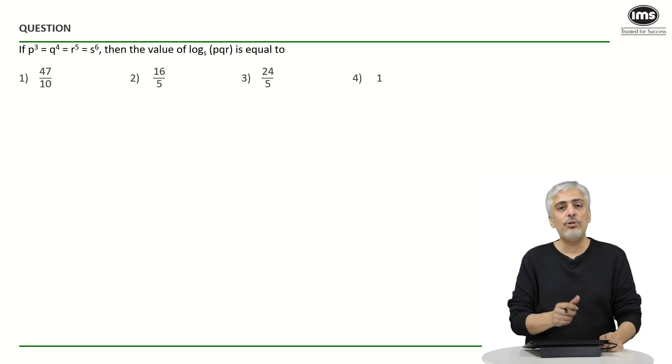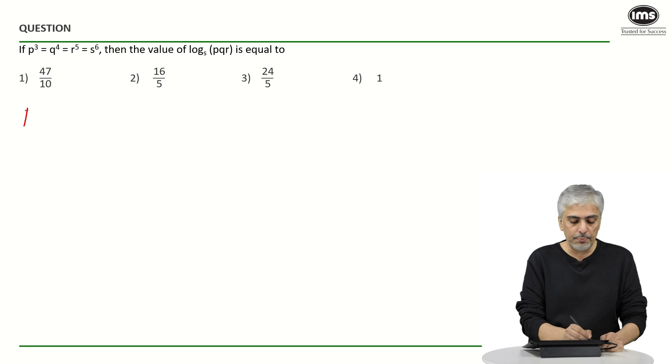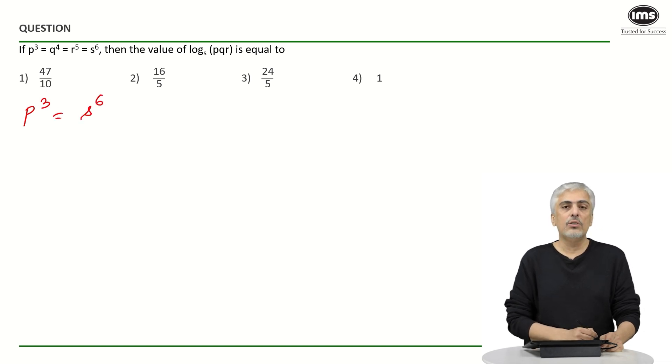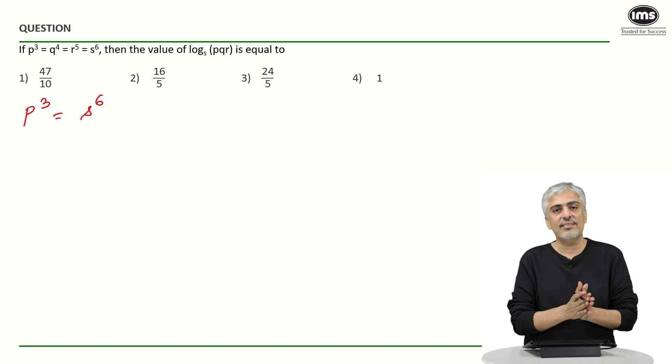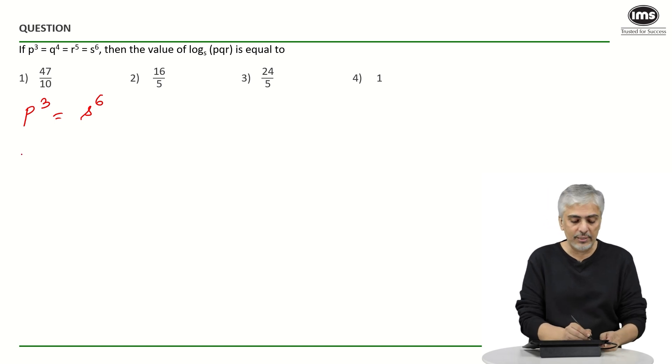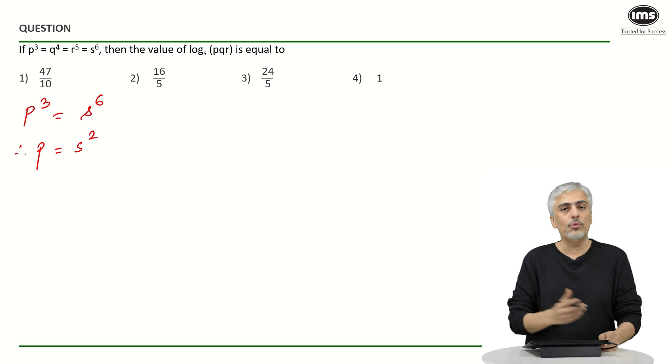Now, which means you need to compare all of them to s individually. So, p cube is s raised to 6. Now because 3 and 6, 6 is a multiple of 3, this is very simple. P becomes s square, taking cube root on both sides.